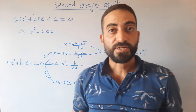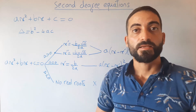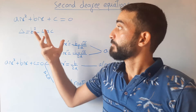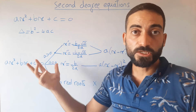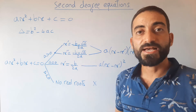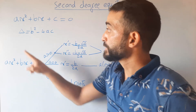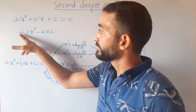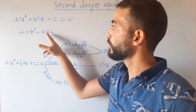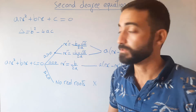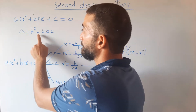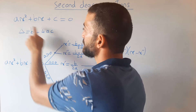To solve this equation, there are several ways, the most important of which is by discriminant. The discriminant is of the form: delta equals b squared minus 4ac.